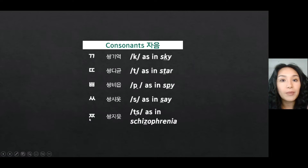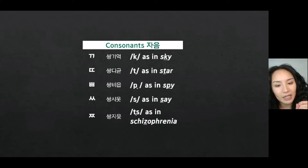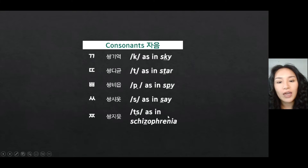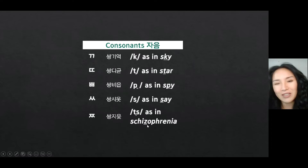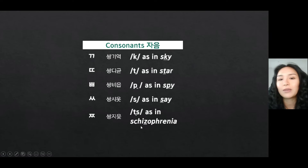The next one: the basic form goes J, as in 'judge.' If duplicated, it gets stronger — J, as in 'schizophrenia.' It's quite difficult to find an English word with this particular sound, so I chose 'schizophrenia.'